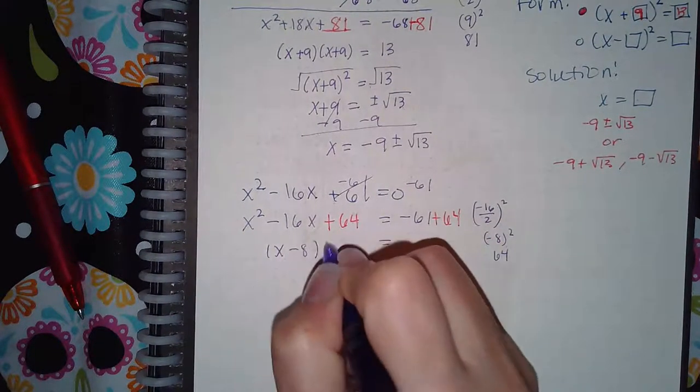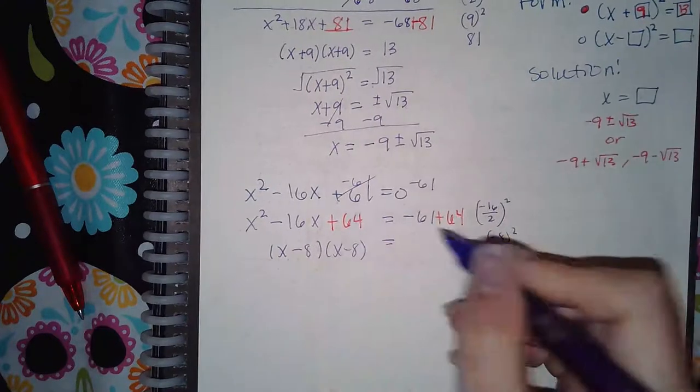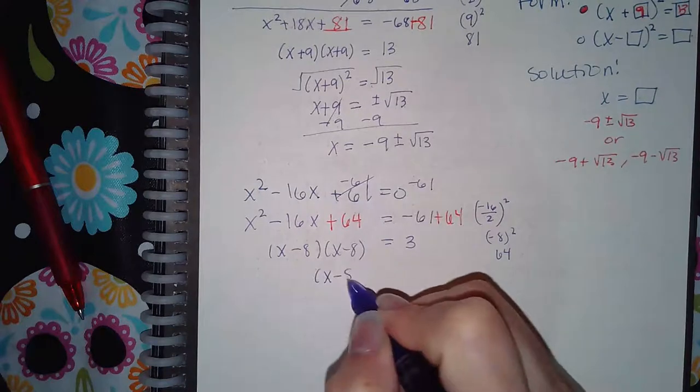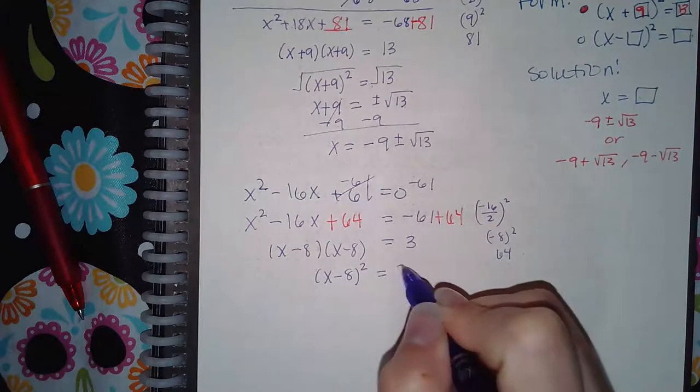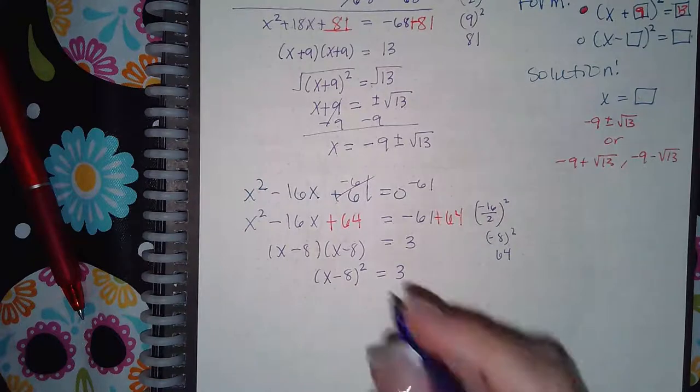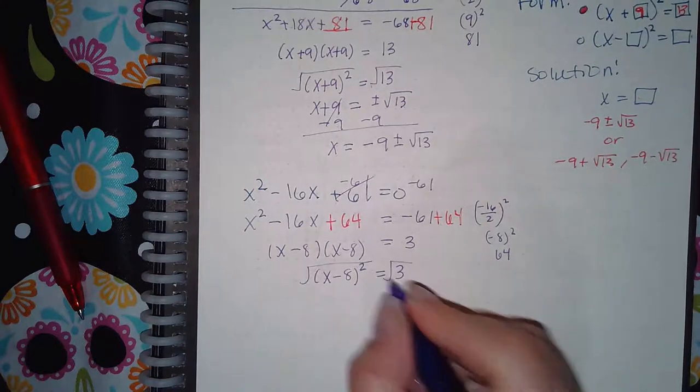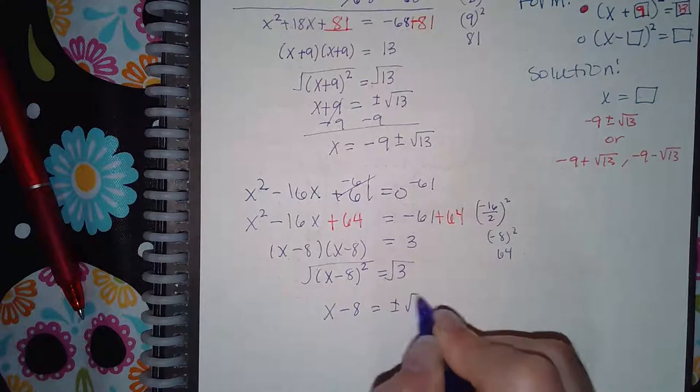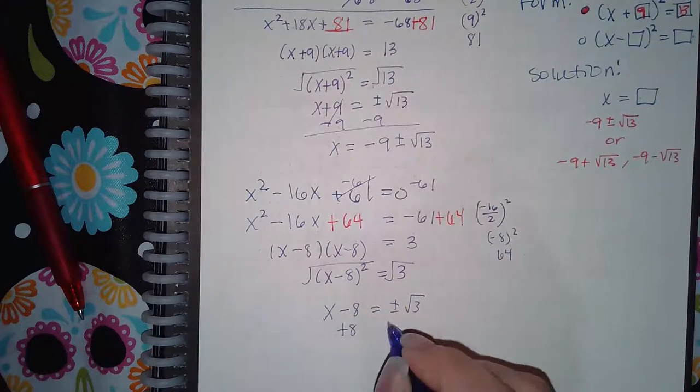Now when I factor the left hand side I will get X minus 8 and X minus 8. Over here I will get 3. This can be written as X minus 8 squared, which is actually completing the square. And then I can take the square root of both sides. I get X minus 8 equals plus or minus the square root of 3, and then add 8 to both sides.